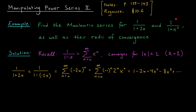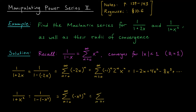Let's try doing the same thing with our other function, 1 over 1 plus x squared. To make it look like 1 over 1 minus x, I'm going to rewrite the denominator as 1 minus negative x squared. We have the same function we started with, except instead of an x, we have a negative x squared. I'll do the same substitution in the Maclaurin series. I get the sum from 0 to infinity of negative x squared all to the power n, which when expanded gives you the sum from 0 to infinity of negative 1 to the n, x to the 2n. That's 1 minus x squared plus x to the 4 minus x to the 8 and so on.